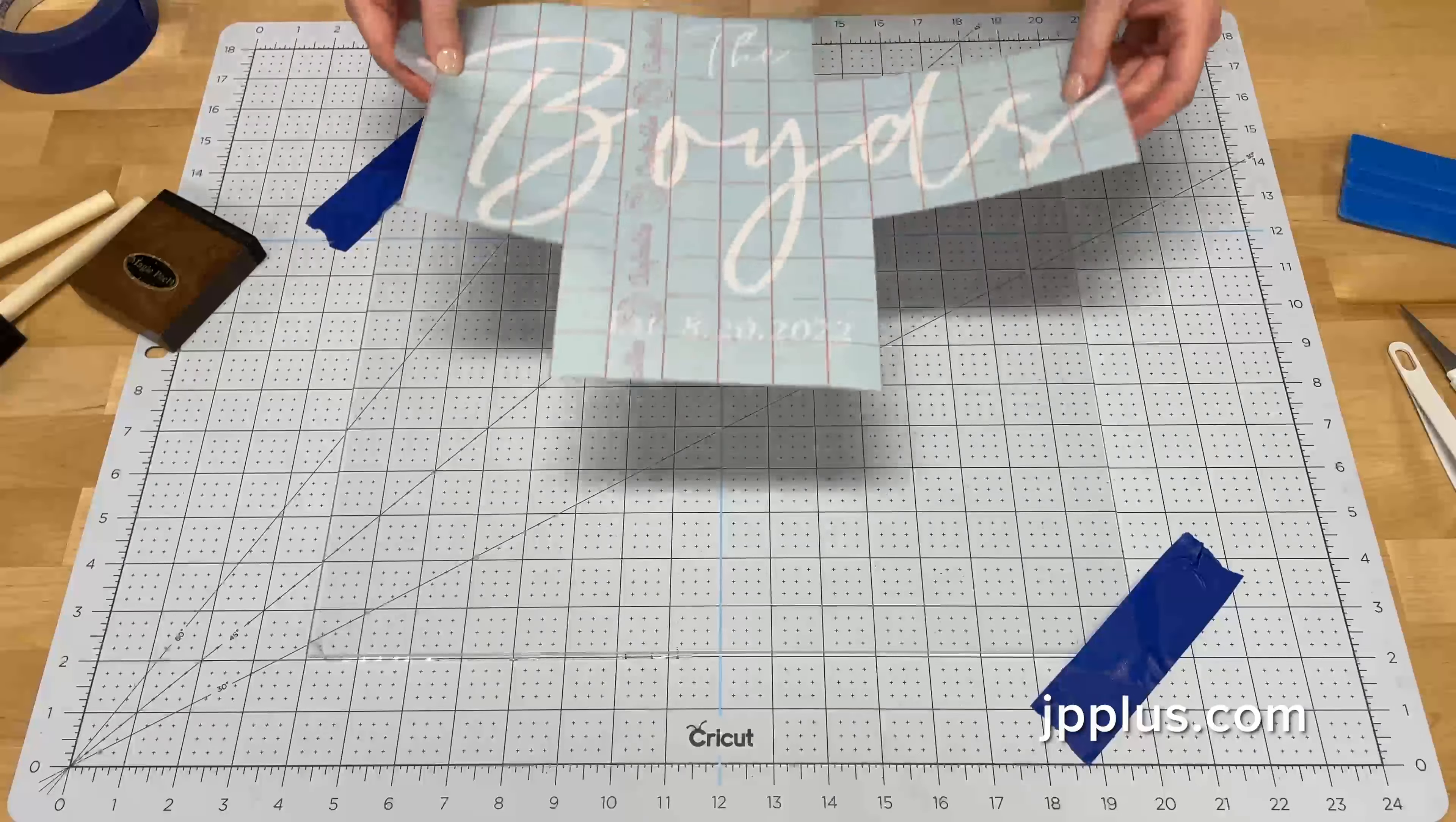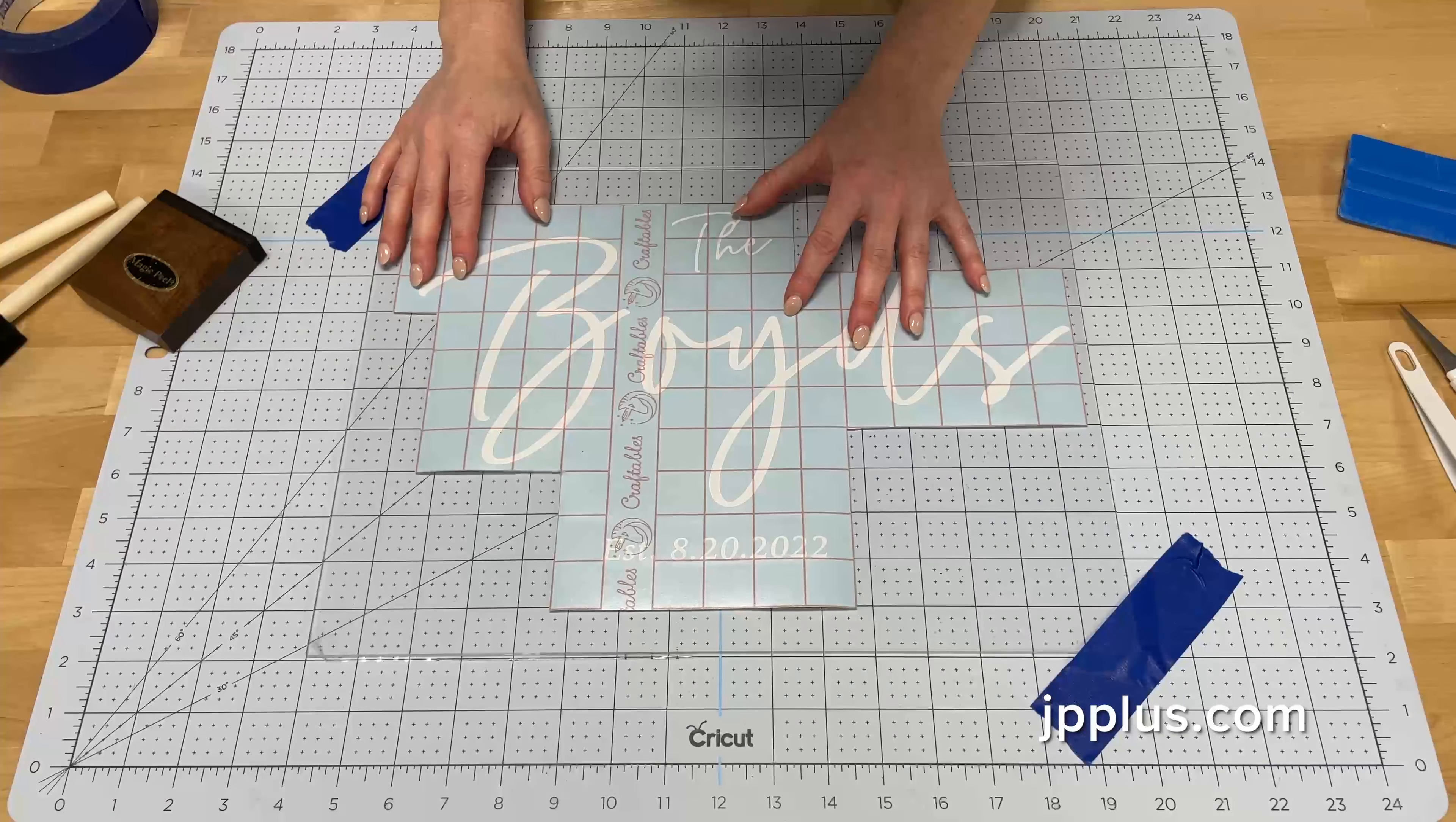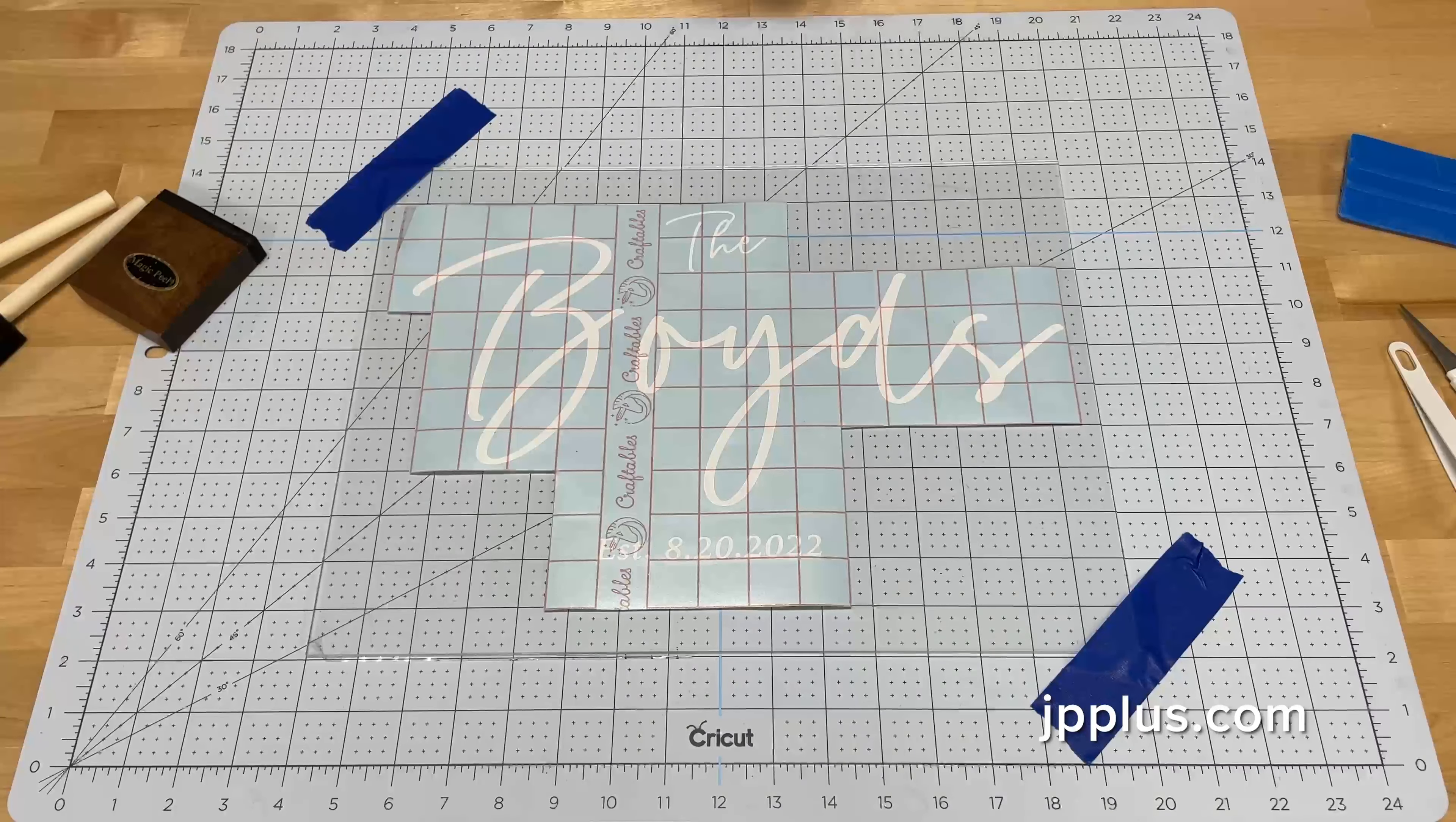And then I'm going to start aligning my vinyl transfer. So once I've got it where I want it, I'm going to run a piece of painter's tape down the center to keep it in place.